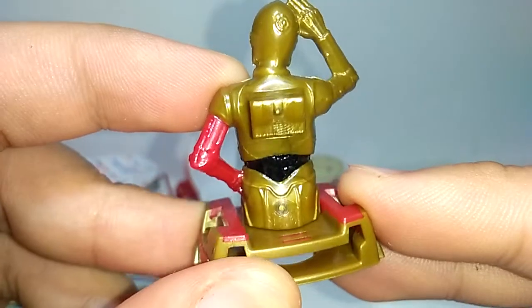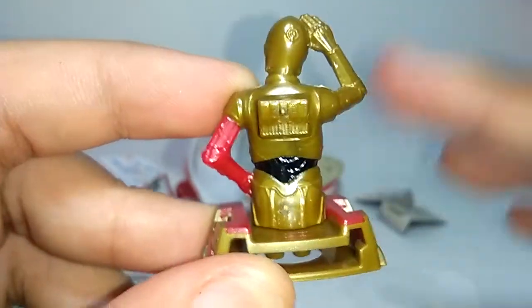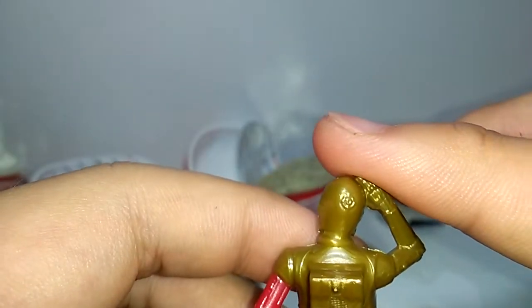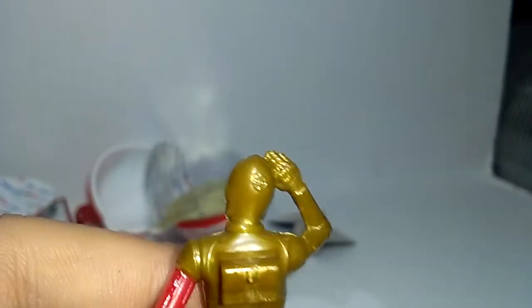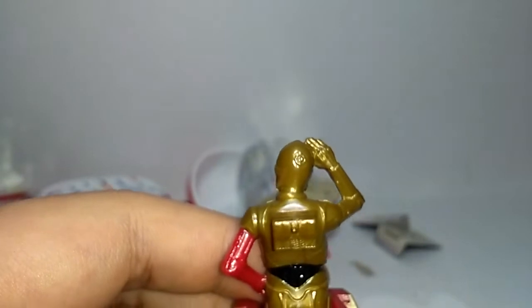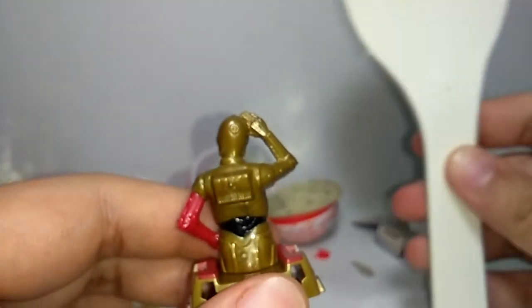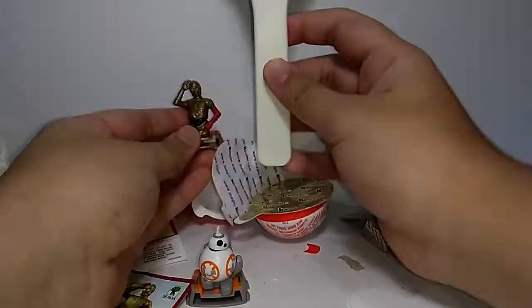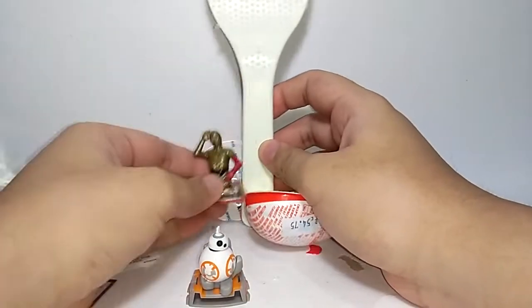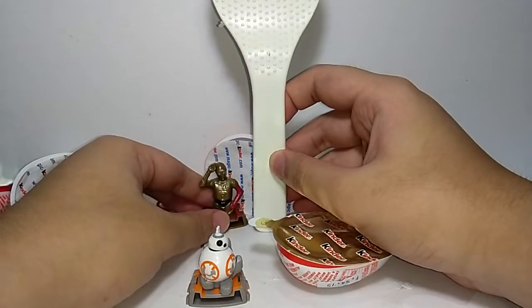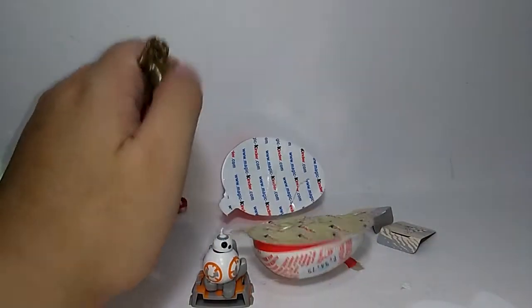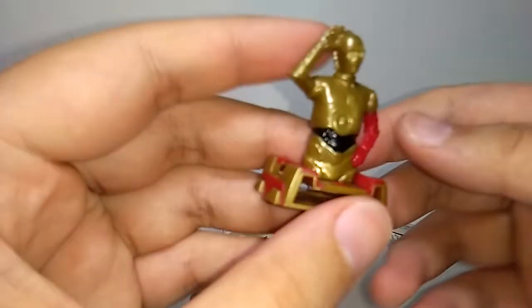This is the back. Actually this is really really small. What can I get for scale? Oops. This is what we use to scoop rice in our home and this is C-3PO. Can you see how small he is?